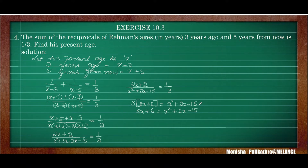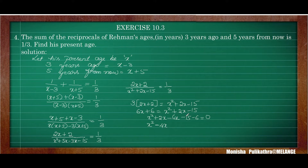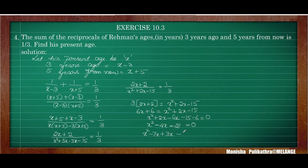This simplifies to x squared minus four x minus twenty one equals zero. We need two middle terms whose product is twenty one and difference is four. Those numbers are seven and three: seven threes are twenty one and seven minus three is four. So we write minus seven x plus three x.